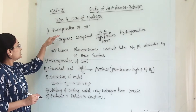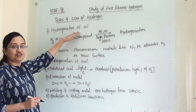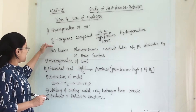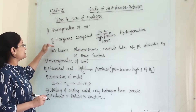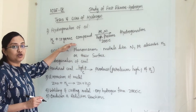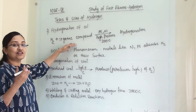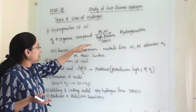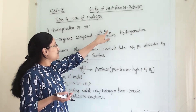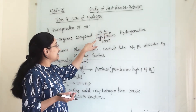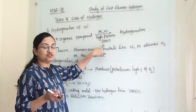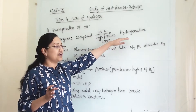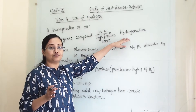First is the hydrogenation of oil — we use hydrogen here. When hydrogen gas is reacted with an organic compound in the presence of platinum and nickel as catalysts, at high pressure and temperature around 200 degrees Celsius, hydrogenation occurs.